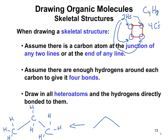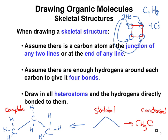So this was going from a skeletal structure to a complete structure. And you could also write this as a condensed structure: CH3, CH2, CH3. So again, different ways to write the different structures, and you should be familiar with all of these — the complete, the condensed, and the skeletal.